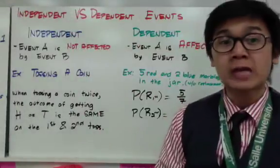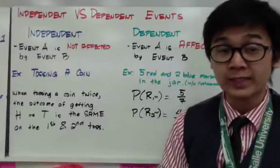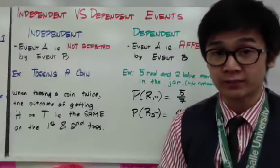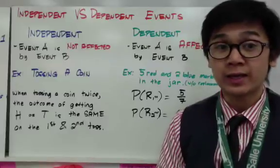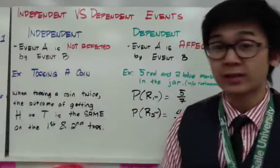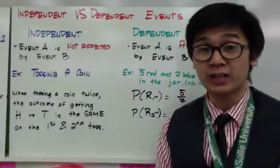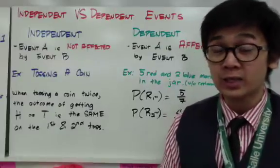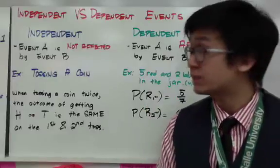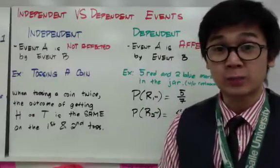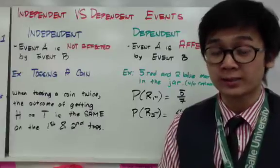There are two types of events in probability: independent events and dependent events. In an independent event, event A is not affected by event B. For example, in an experiment of tossing a coin twice, we examine what happens on each toss.